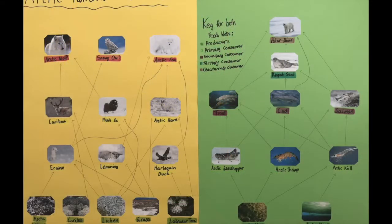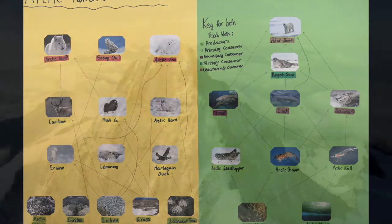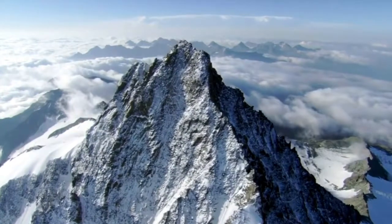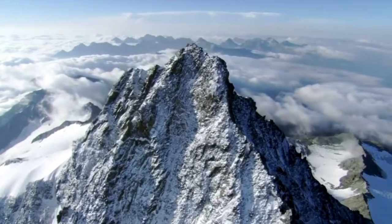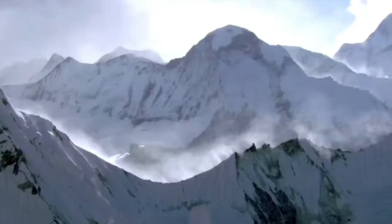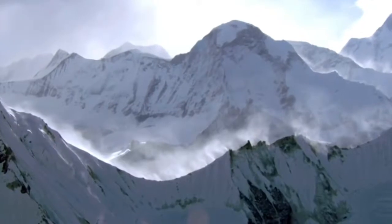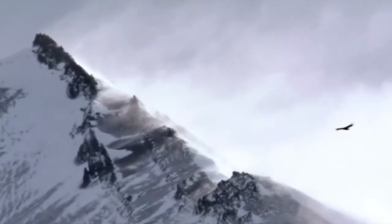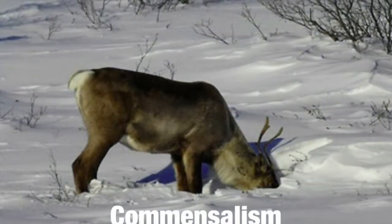Primary consumers are usually herbivores. Secondary and tertiary consumers are known as carnivores, and quaternary consumers are often referred to as apex predators. In Arctic tundra, symbiotic relationships between animals are vital for survival of the biome. Commensalism is when one species benefits and the other is not harmed or helped — an example is the caribou digging up soil and exposing small mammals for the Arctic fox to feed on.